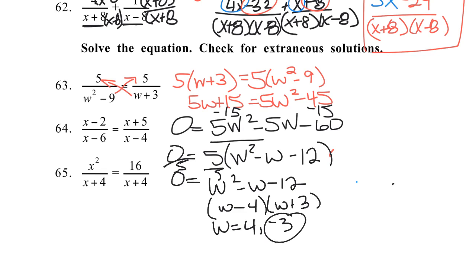Now if I plug negative 3 back in up here, I get 0, negative 3 plus 3. When I plug in 3 over here, I also get 0. So that's extraneous because I can't divide by 0. So my only answer is w equals 4.